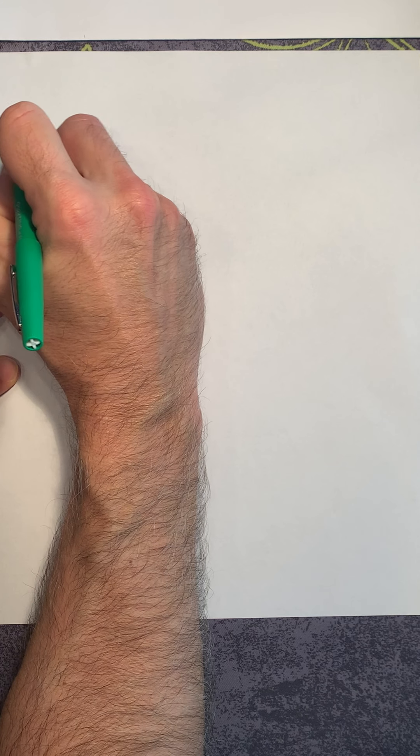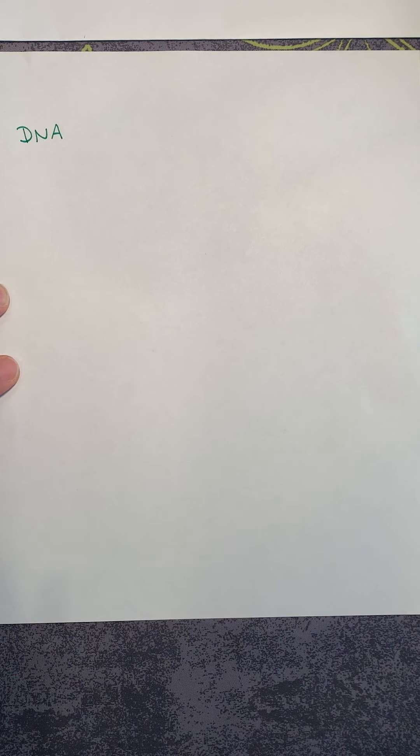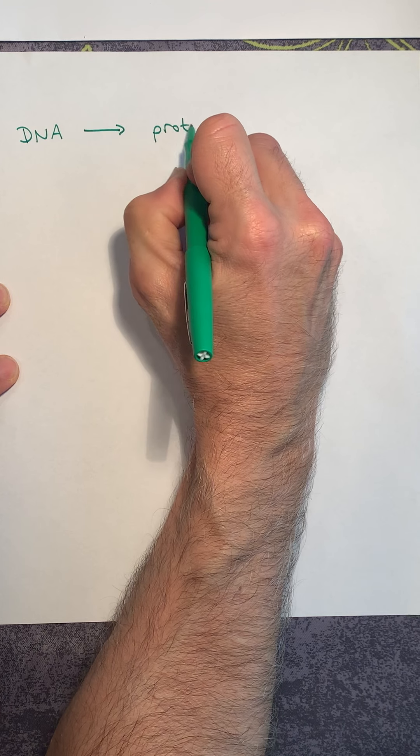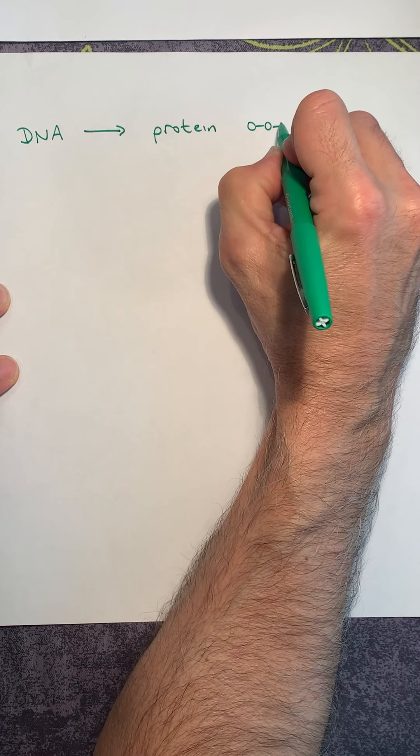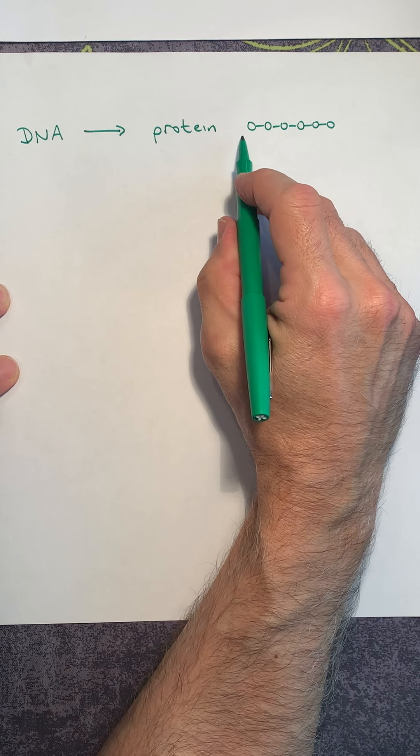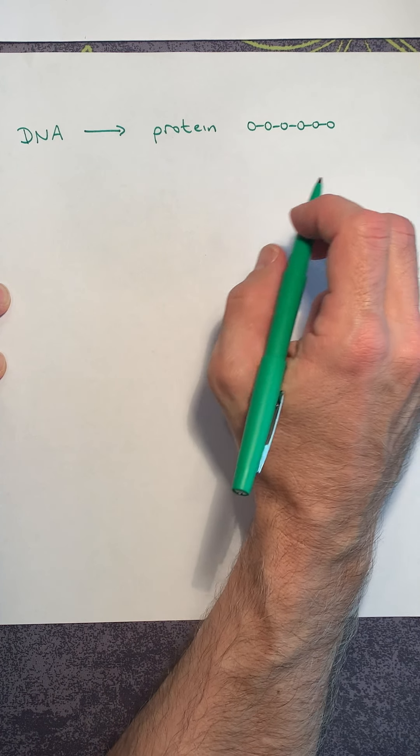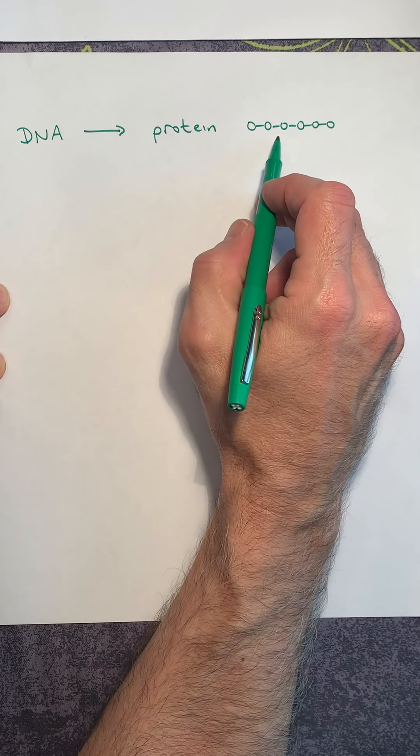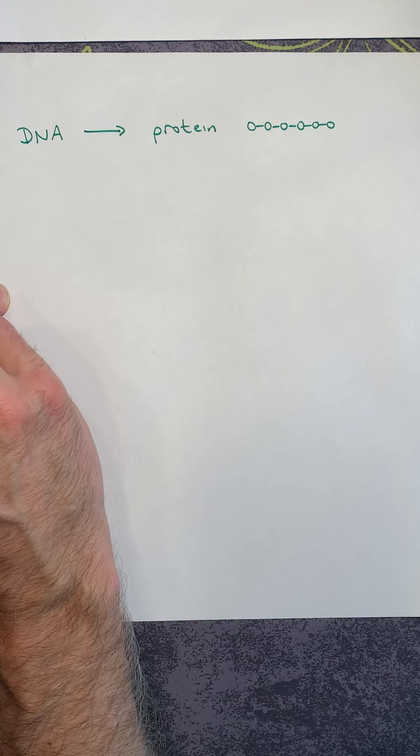So earlier we talked about DNA, deoxyribonucleic acid, the genetic material for all living things. We said how DNA is the instructions for how to make protein. Protein is this long chain of amino acids, and the amino acids are put together in a very specific order, just like the letters in a word. That makes different proteins as you change the order of the amino acids.